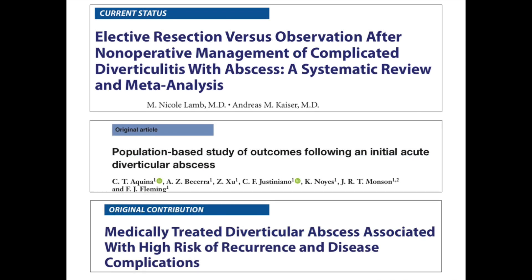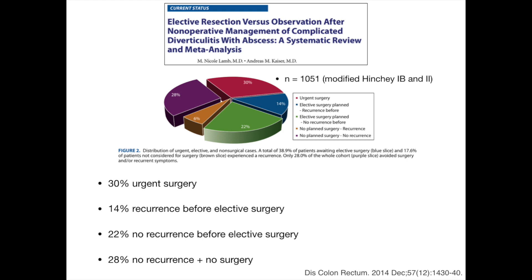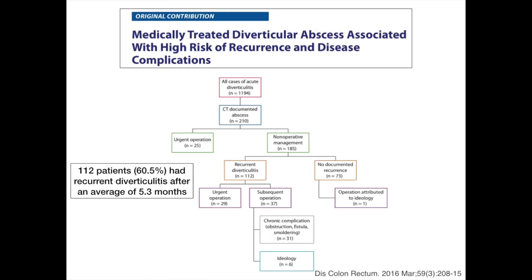However, the recurrence rate after successful management of complicated diverticulitis with abscess remains high in most studies. One study found that only 28% of patients with abscess could avoid surgery without recurrence. Another study showed that up to 60% of patients who received non-operative management for abscess had recurrent disease within 5 months. That is why most studies support that patients should receive surgery after successfully completing non-operative management for abscess.